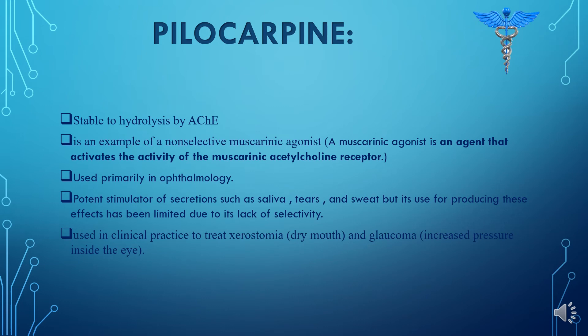In clinical practice, pilocarpine is used to treat xerostomia — dry mouth — and glaucoma, in which intraocular pressure is increased. Sjögren's syndrome, which is characterized by dry mouth and lack of tears, is treated with oral pilocarpine tablets and cevimeline.